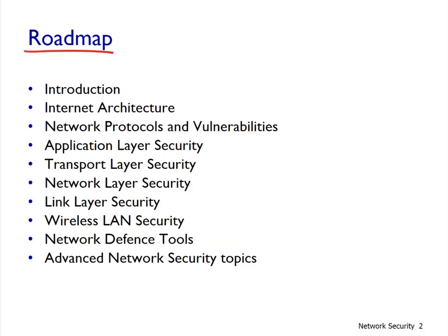The roadmap for this presentation is as follows. I'll go through the introduction, then briefly describe the internet architecture to help us understand distributed systems and how everything fits together. Then we'll look at network protocols and some vulnerabilities, going through each of the internet layers — five layers from application, transport, network, down to link. I won't cover the physical layer but will talk about wireless and security. I'll briefly skim network defense tools, and conclude with advanced topics like SDN and IoT.